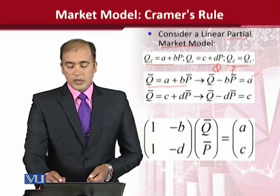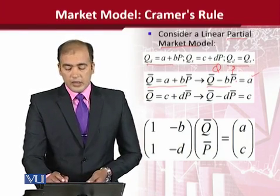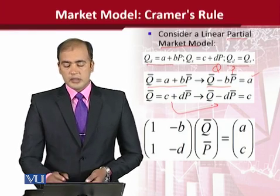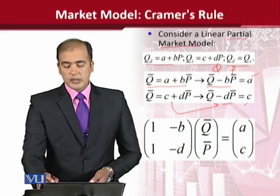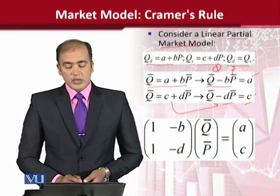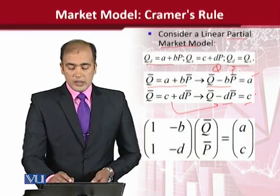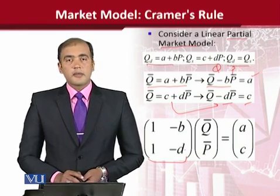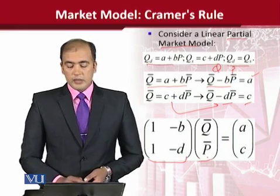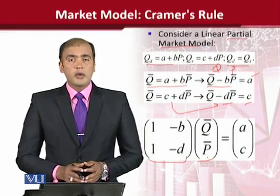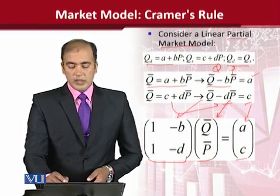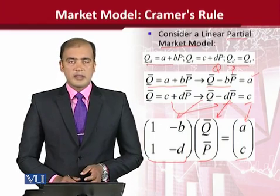The constant is on one side and the variables are on the left-hand side. We have also rearranged the supply function, and it appears like this — Q first, then price, then the constant on the right-hand side. We can extract very easily the coefficient matrix, the variable matrix, and the constant matrix. We have done this before — how we can extract these.